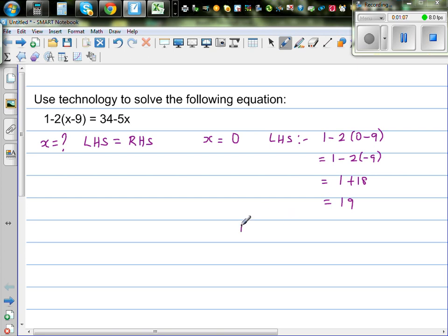And what's your right hand side? So your right hand side is 34 minus 5 times 0, which is going to be 34. So x is equal to 0 is not right.